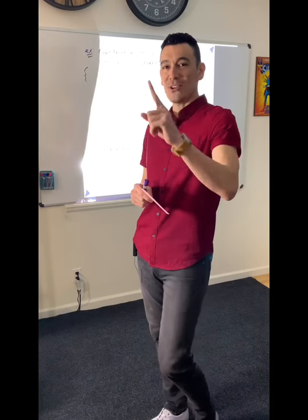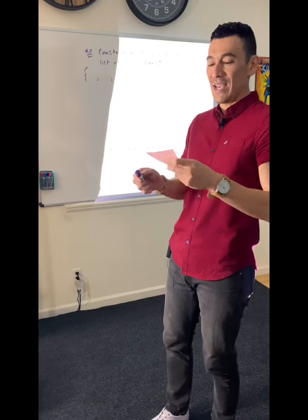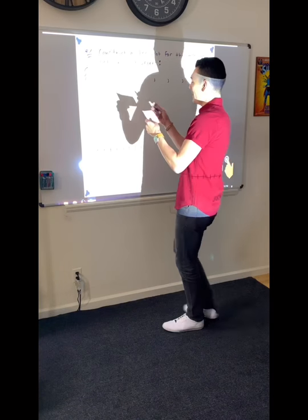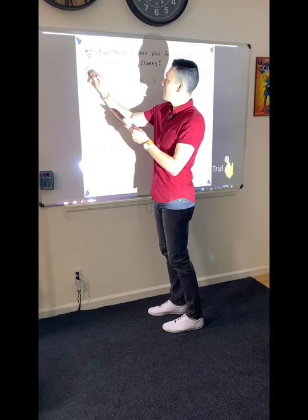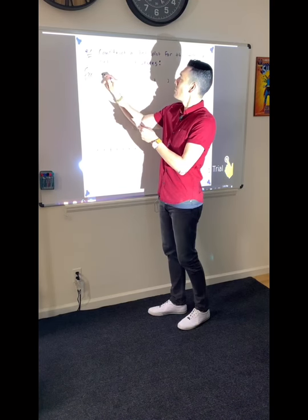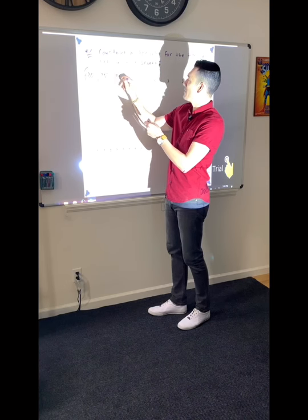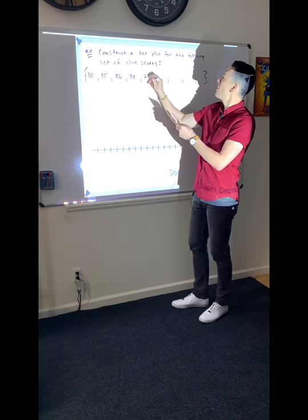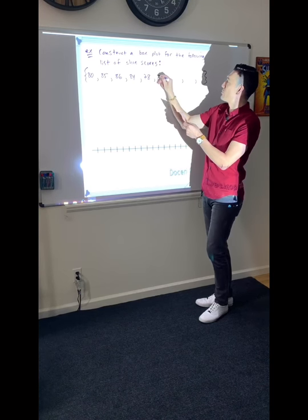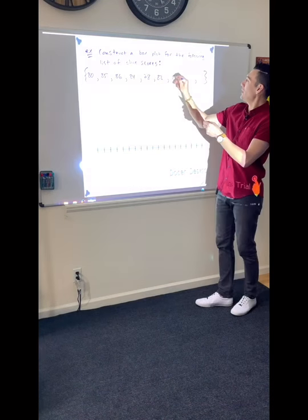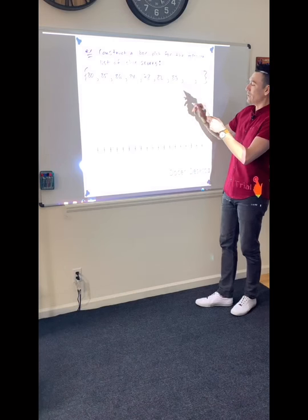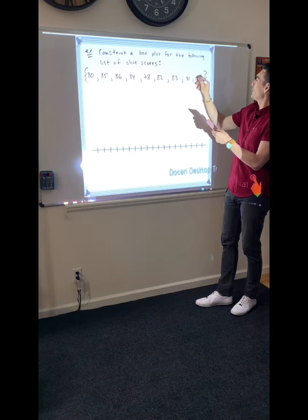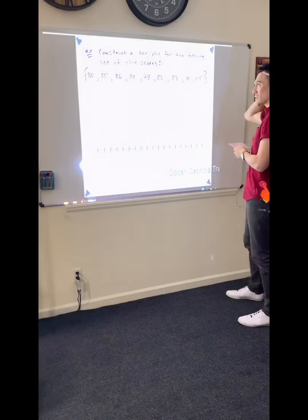So those are the scores I gave to my shoes. You should already have these written down: 80, 82, 83, 81, and 105. The white cement's got a score of 105.